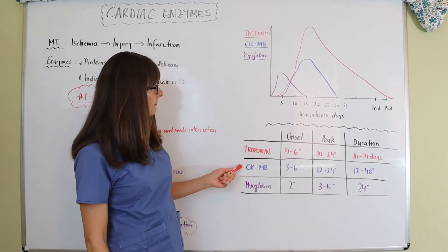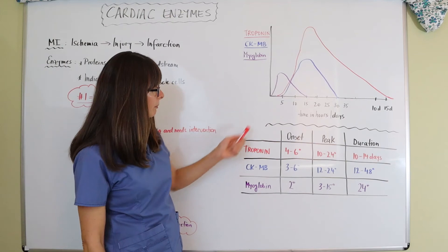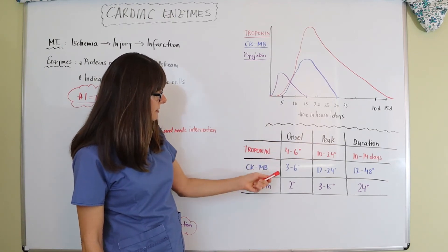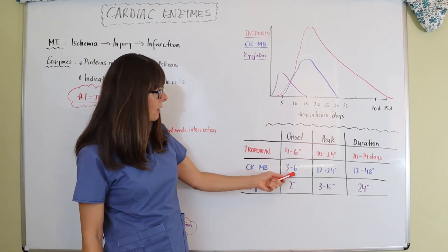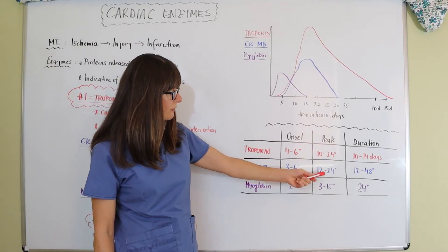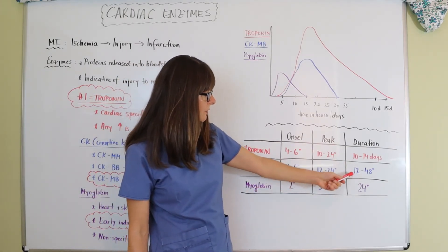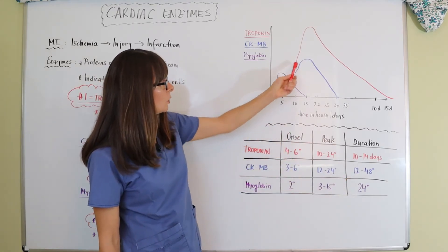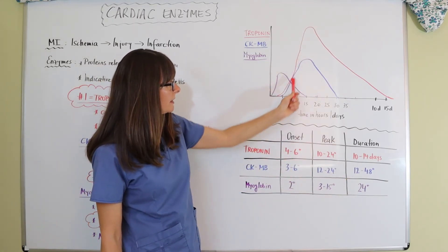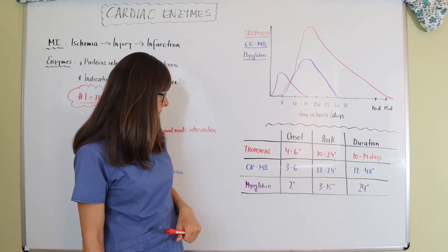And then CKMB is the blue line here. So the onset of elevation is three to six hours. It peaks at 12 to 24 and then lasts about 12 to 48 hours. And this won't be as elevated. And again, here's the graph that corresponds with that.